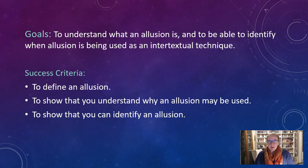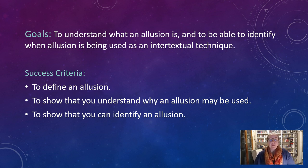You studied intertextuality the other day and on your sheet there's a little question about that to revise what you've done, so you should be able to tell me what intertextuality is. Allusion is just a part of intertextuality. Your success criteria is to be able to define what an allusion is, to show that you understand why an allusion might be used, and to show that you can identify an allusion.